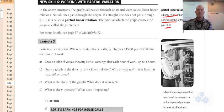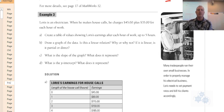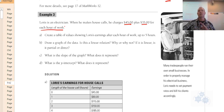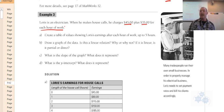So where would we encounter this? Example three tells us that Loris is an electrician. When he makes house calls, he charges $45 plus $35 for each hour of work. The $45 is your service fee or flat fee — that's charged no matter what. As soon as he comes to your house, you owe $45, and then his time after that is paid at a certain rate.